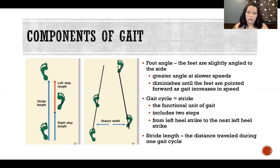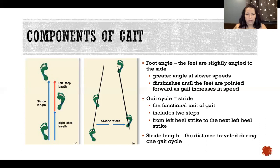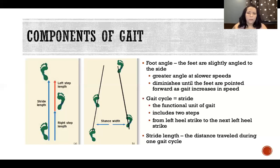A gait cycle is synonymous with a stride — we can use either term. A gait cycle or stride is a functional unit of gait that includes two steps. It goes all the way from left heel strike until the next left heel strike, or from right heel strike until the next right heel strike — essentially a whole cycle of two steps and all the phases included. Stride length is the distance traveled during one stride or gait cycle.